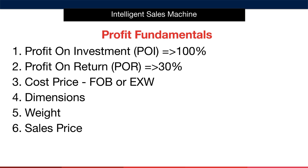We must also know the dimensions of the individual finished product — the height and width when it's in its individual packaging — to know how much space it takes up when shipped. We'll also need the weight of a fully packaged finished product, and finally the sales price you intend to sell at. Once we have all these variables, we can put them into the Google sheet and calculate our profitability to the penny — even before we order a sample.